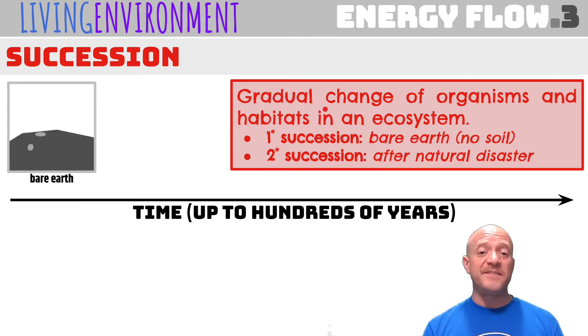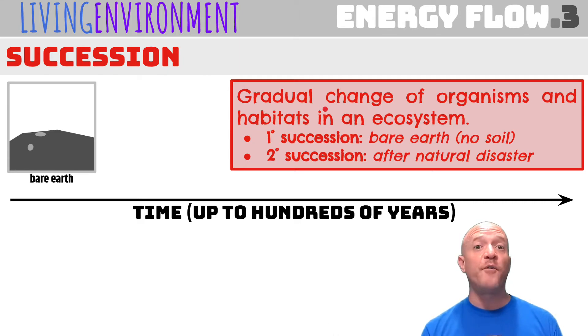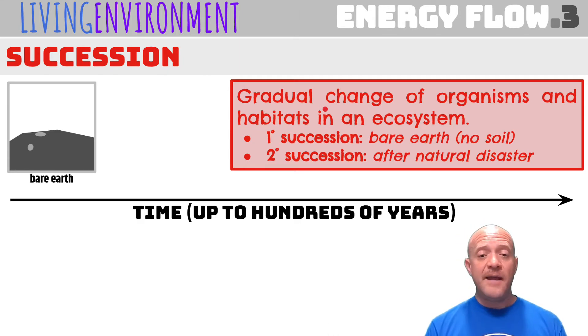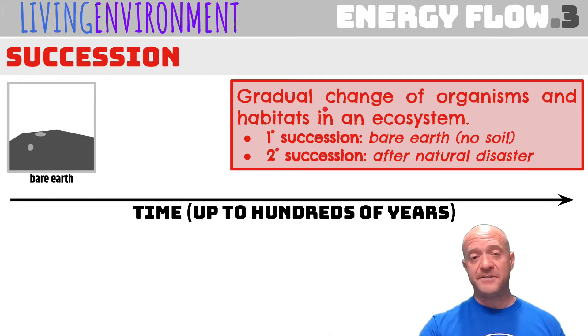An example of secondary succession is after a natural disaster, like a flood, a forest fire, or a tsunami. And this can take anywhere from dozens up to hundreds of years.